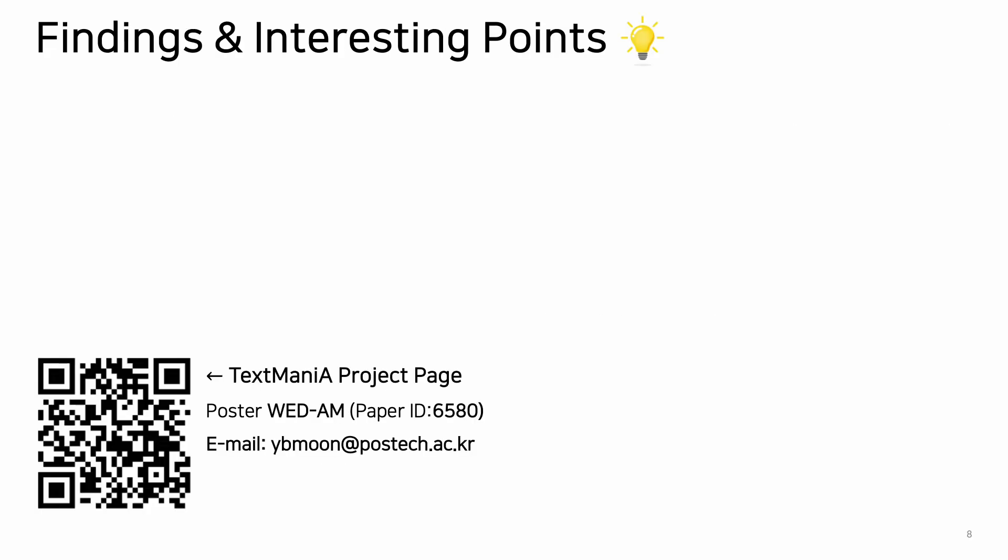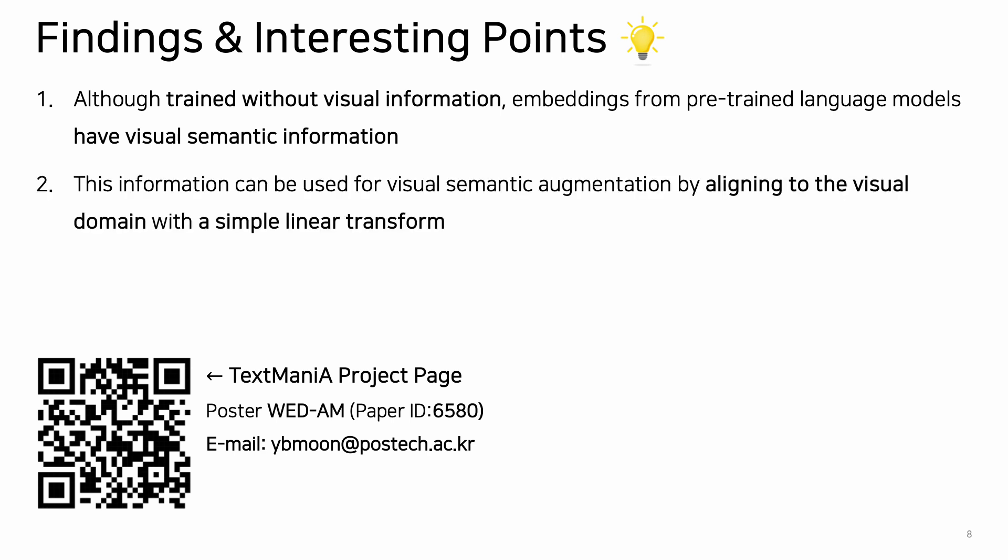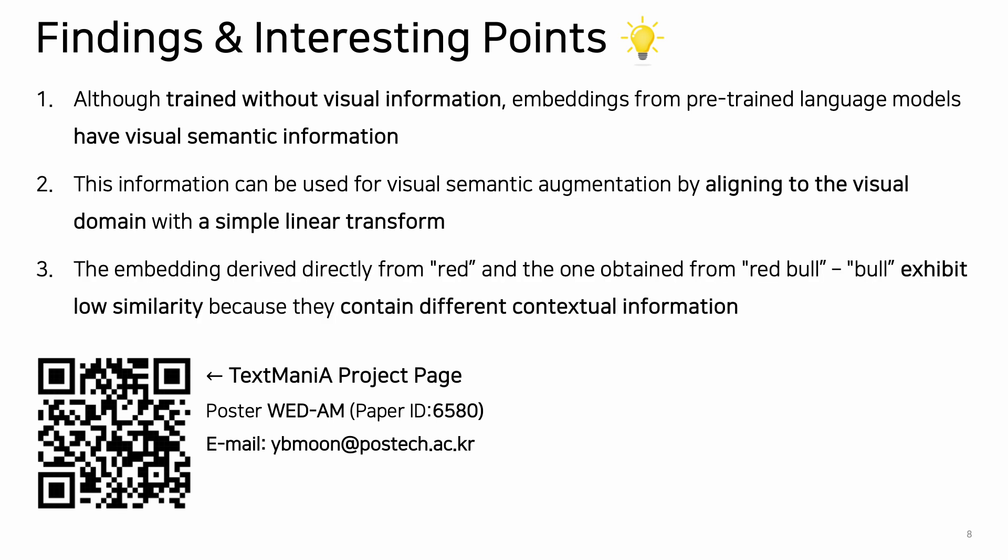We conclude with our key findings. First, although language models are trained without visual information, text embeddings have visual semantic information. Second, this information can be used for visual semantic augmentation by aligning to the visual domain with a simple linear projection. Finally, the direct embedding and the difference vector exhibit low similarity because they contain different contextual information. If you want more details, please visit our project page or our poster session. Thank you for listening.